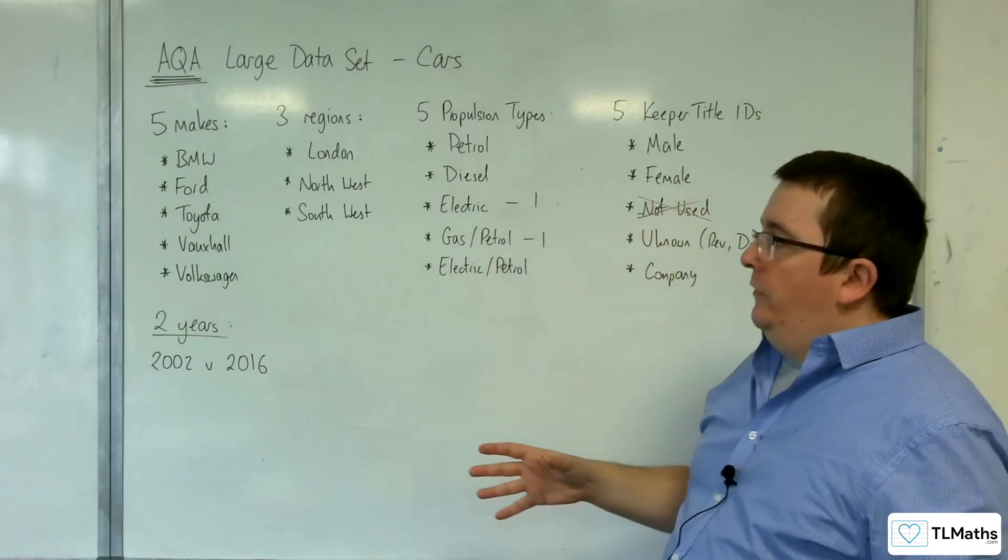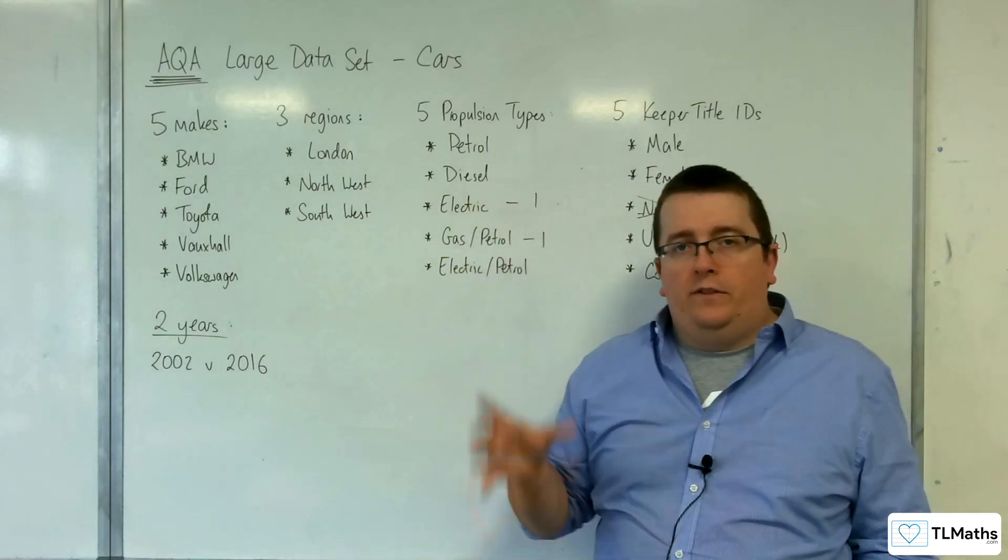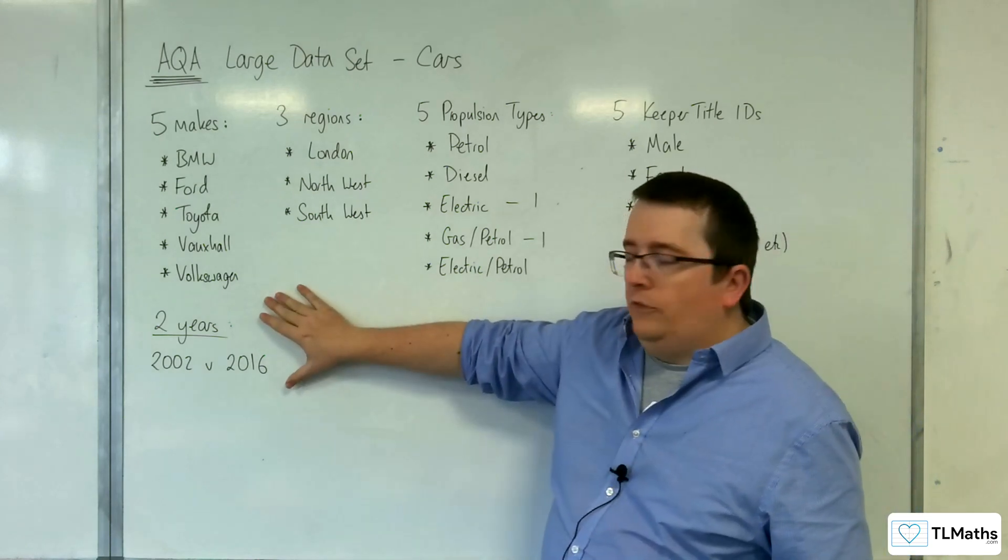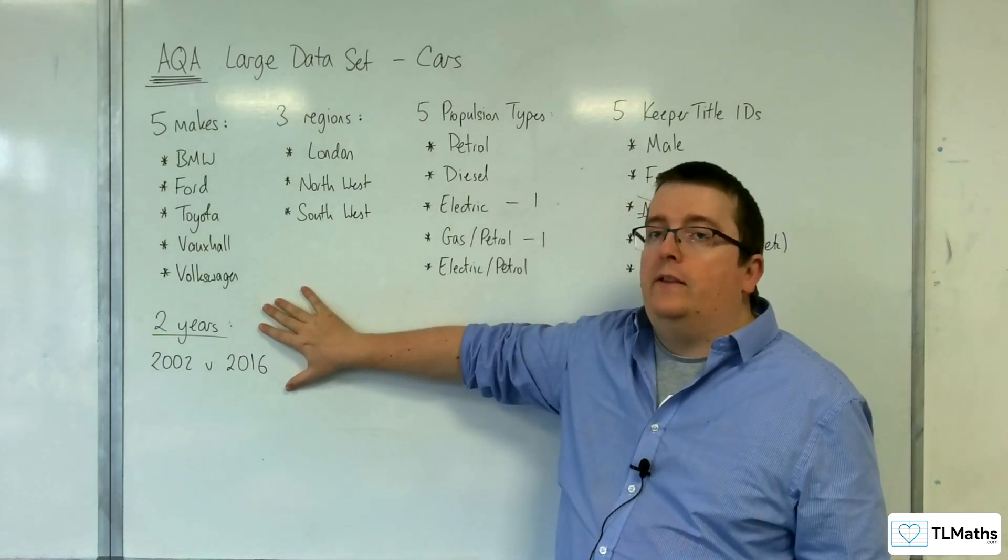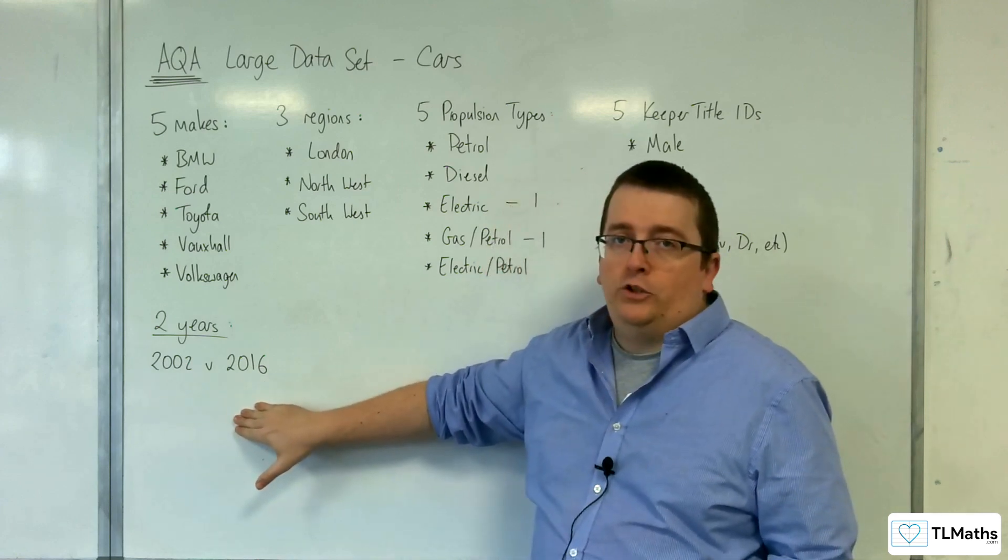We're now going to go through the key bits of information that I think are very useful to you. The first bit is that the data set only considers two different years: 2002 and 2016 are the years of manufacture.